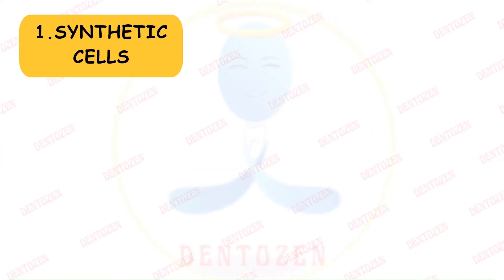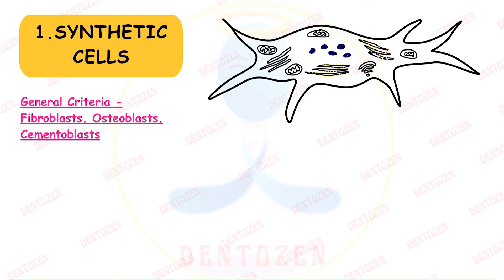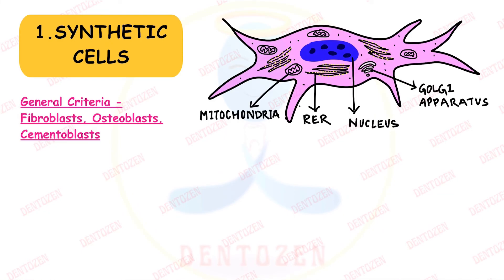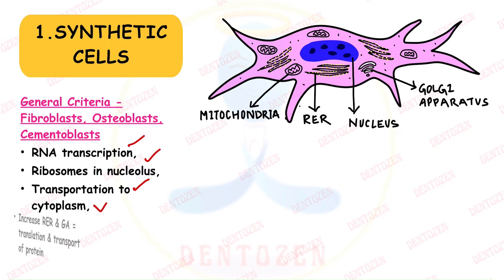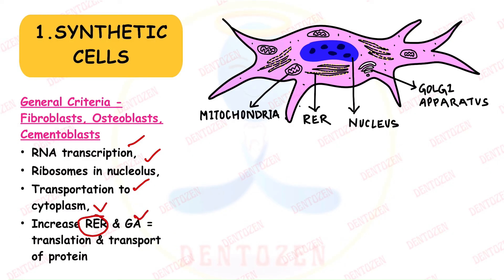All synthetic cells share common general criteria. They produce proteins, so they have many organelles: RNA transcription and ribosomes in the nucleolus, transportation of ribosomes to the cytoplasm, abundant rough endoplasmic reticulum, and Golgi apparatus — all increased for translation and transportation of protein. These are the qualities of an active cell.